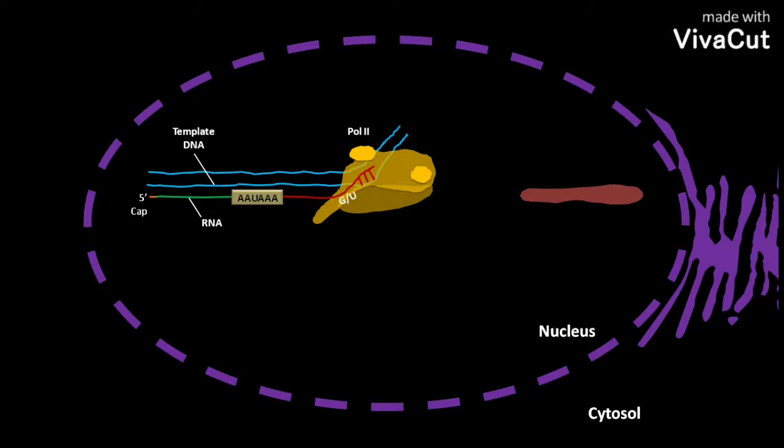The cleavage signal sequence then binds to an enzyme complex containing an endonuclease, a polyadenylate polymerase, and several other multi-subunit proteins. These enzymes and proteins are involved in sequence recognition, stimulation of cleavage, and regulation of length of the poly-A tail.